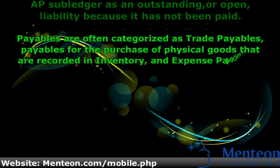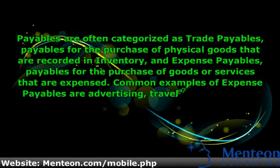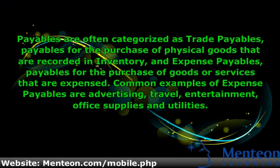Payables are often categorized as trade payables — payables for the purchase of physical goods that are recorded in inventory — and expense payables, payables for the purchase of goods or services that are expensed. Common examples of expense payables are advertising, travel, entertainment, office supplies, and utilities.